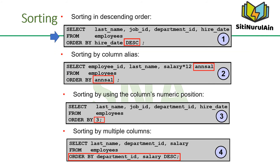In example 1, to reverse the order in which rows are displayed, specify the DESC keyword after the column name in the ORDER BY clause. The slide example sorts the result by the most recently hired employee. In example 2, you can also use a column alias in the ORDER BY clause — the slide example sorts the data by annual salary. In example 3, you can sort query results by specifying the numeric position of the column in the SELECT clause. The slide example sorts the result by department_ID, as this column is at the third position in the SELECT clause.